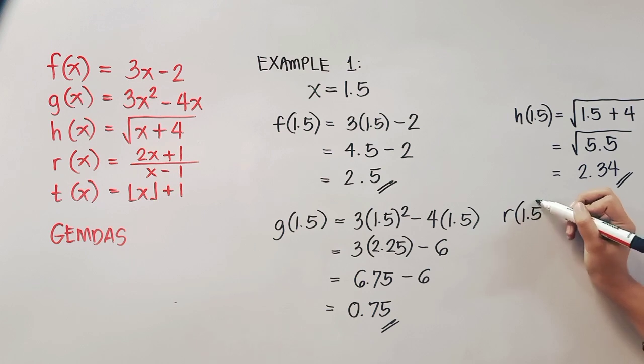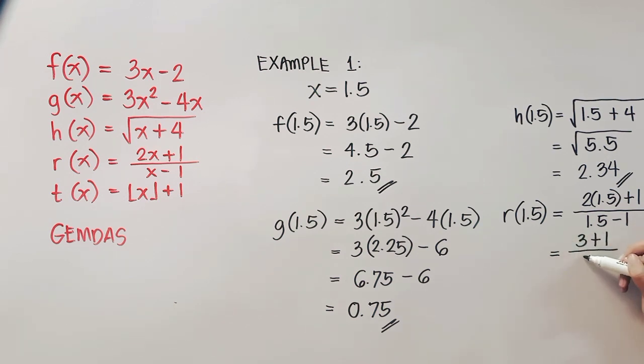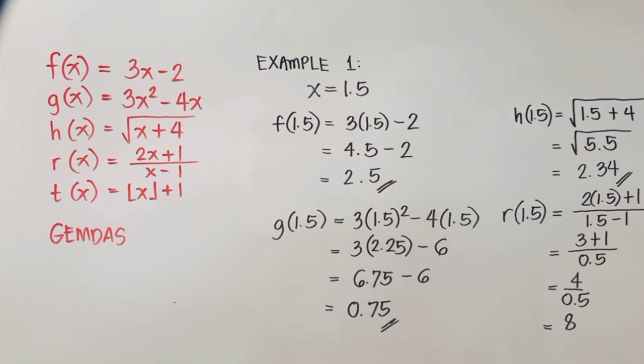Let us now proceed to r of x. Again, that's r of 1.5 is equal to, copy everything and then replace x by 1.5. And then multiply first. So that will give us 3 plus 1, and then that is 0.5. Therefore that will give us 4 over 0.5. Dividing that one, it will give us a final answer of 8.